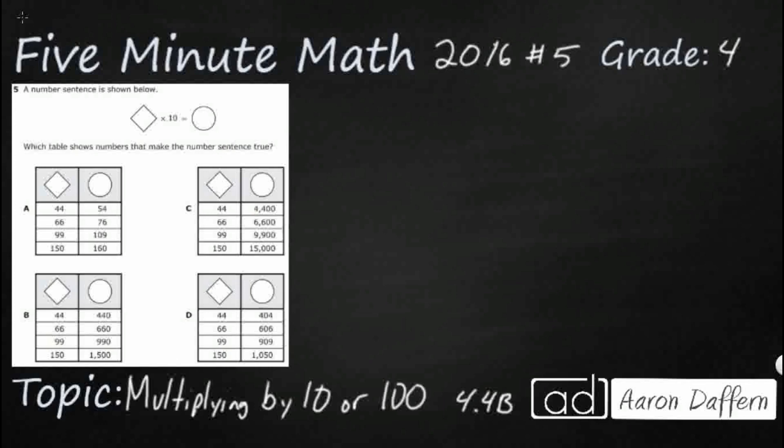So we've got a basic number sentence. We've got a square, and this is a square even though it's rotated, not a rhombus, because we've got four square corners with equal sides. We've got the square times 10 equals circle. So which table shows this number sentence to be true? It's an input-output table where we are multiplying our square by 10 to get a circle.